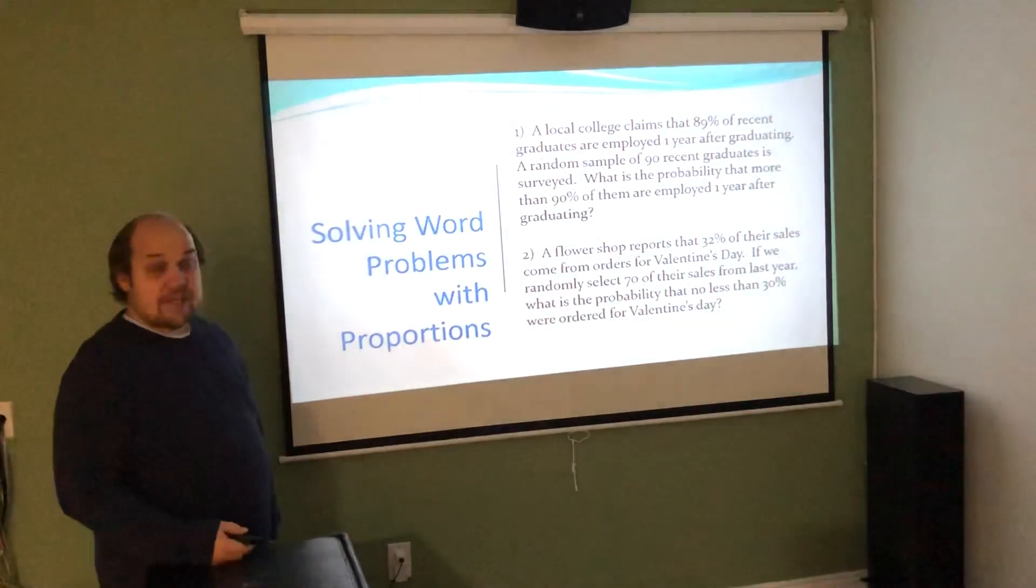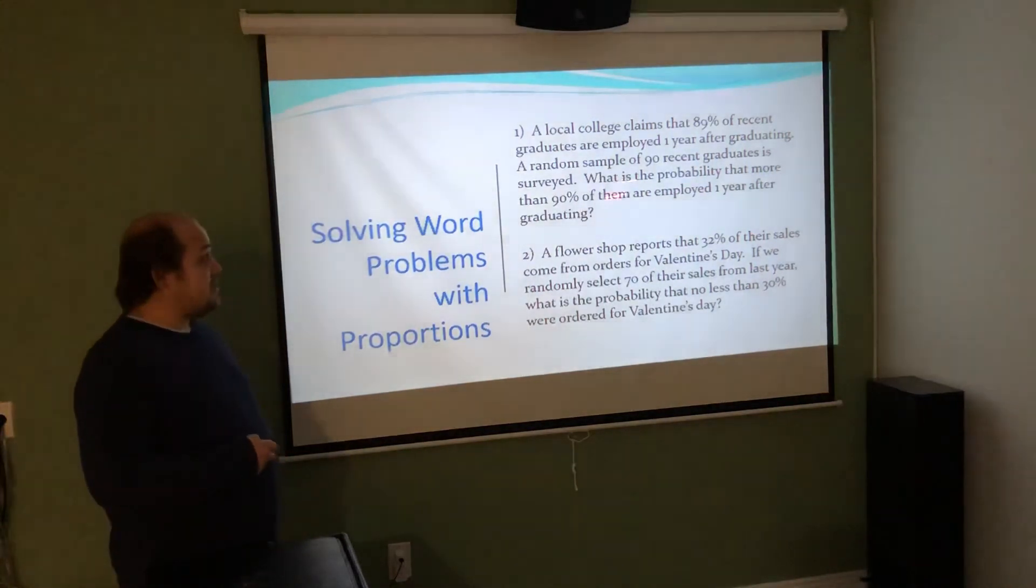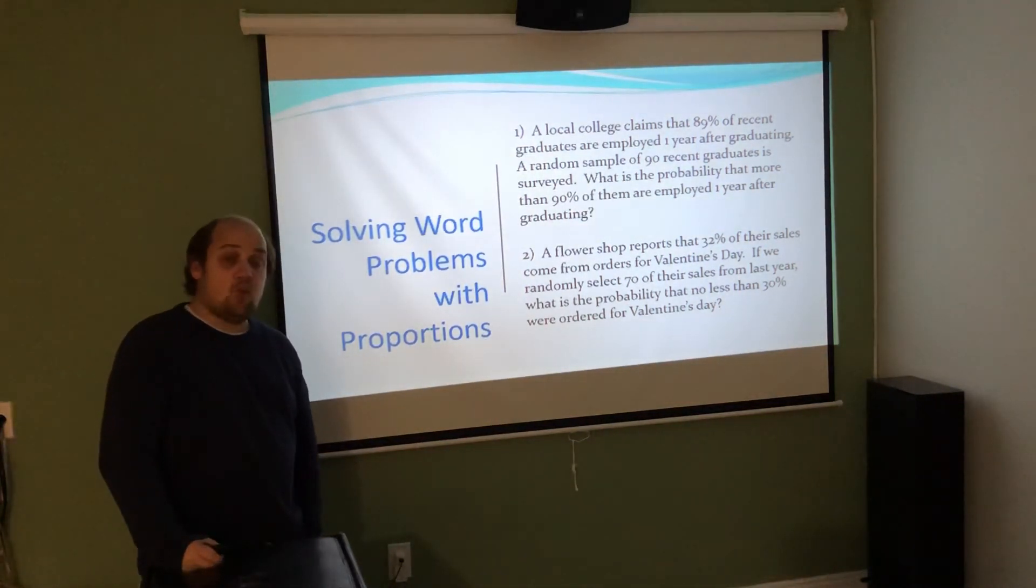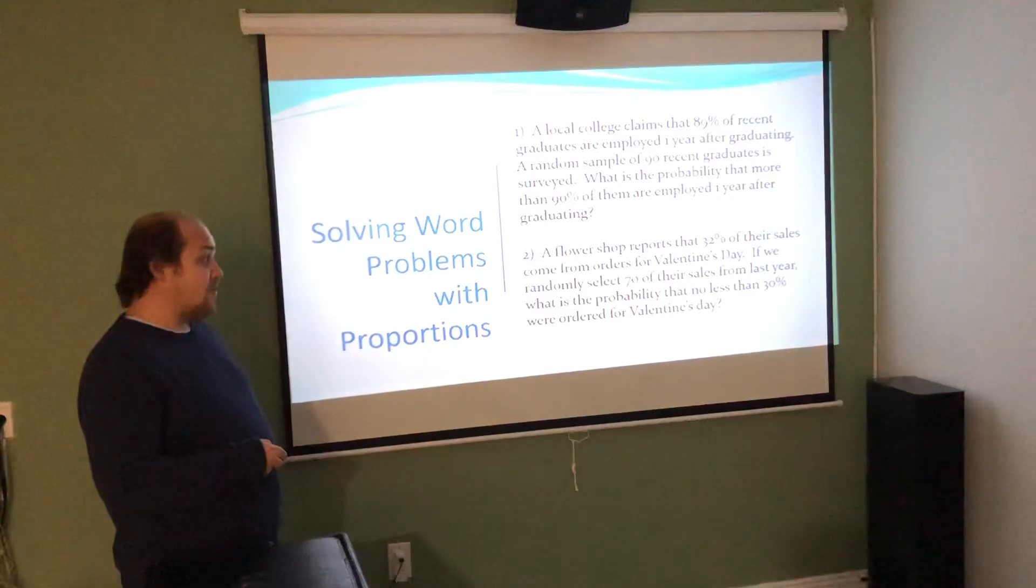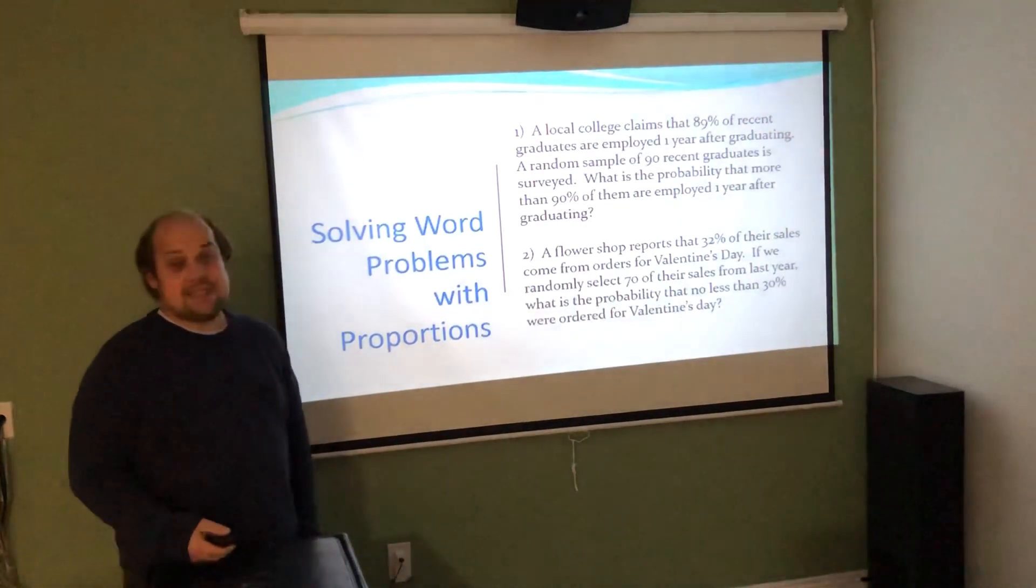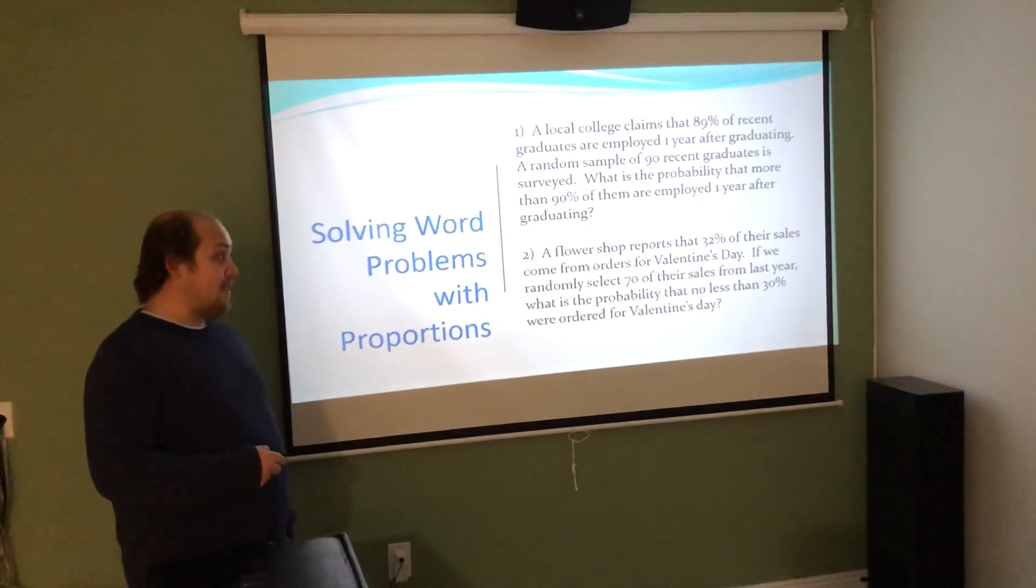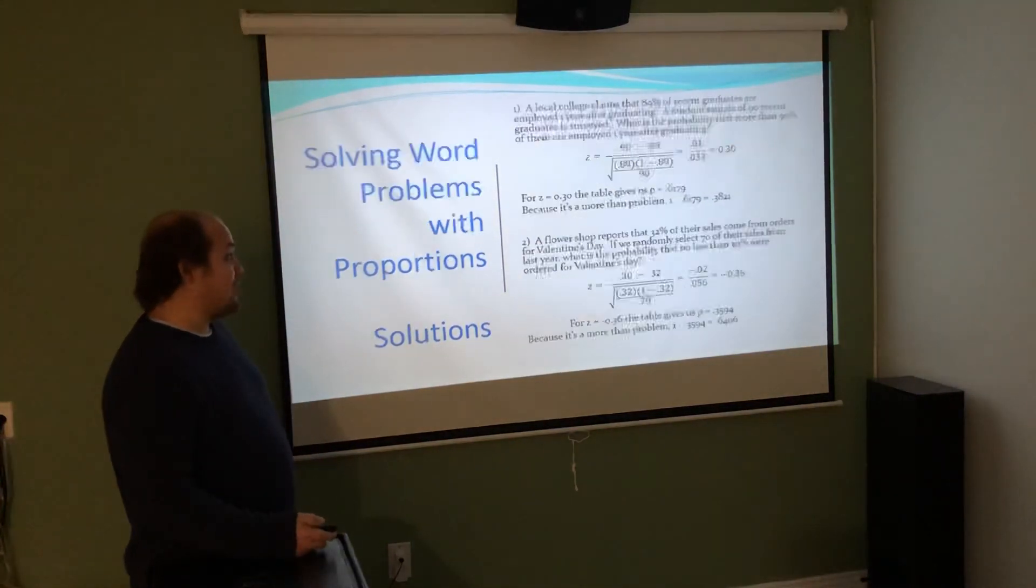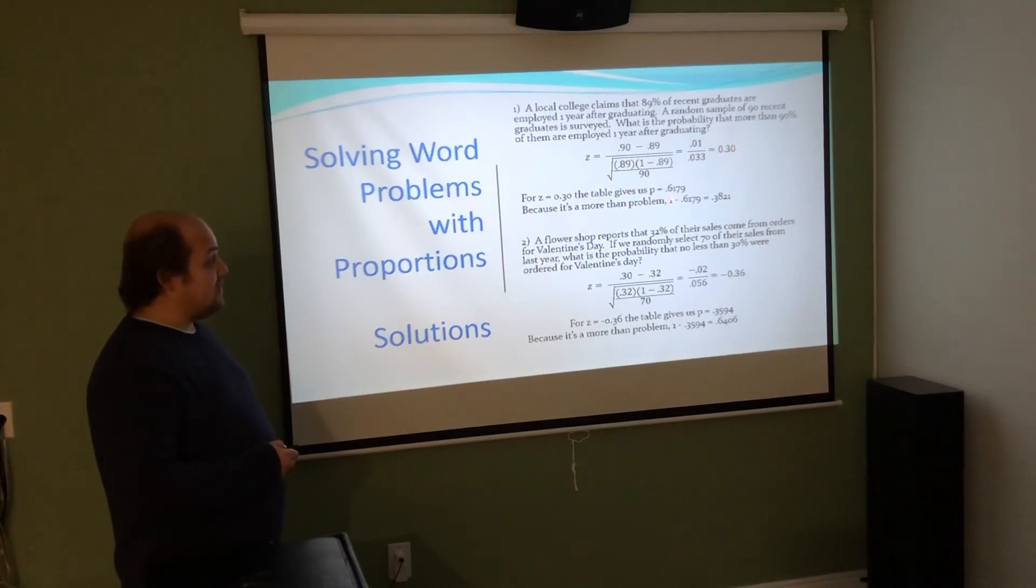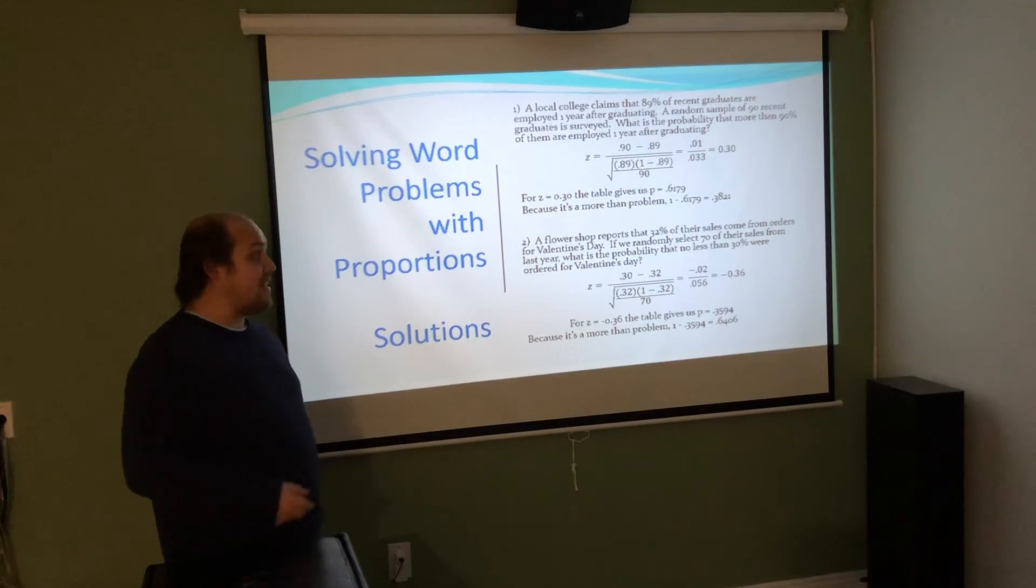Same prompts for each of these, just asking a different question. This time it's saying, what's the probability of more than 90%? For more than 90%, we do 0.90 minus 0.89 over that same square root. When we find an answer, we look up the z-score in the table and do 1 minus the table value. The flower shop reports 32% of their sales - still 32 is our p, but now we're looking for no less than 30%. No less than 30% is the same thing as more than. We're going to do 0.30 minus 0.32 over the root of 0.32(1-0.32) over 70. We get a z-score of 0.30, which points to 0.6179. If I do 1 minus 0.6179, that's how I get to the correct answer, 0.3821. Same idea for number two - we first get our z-score of negative 0.36. The less than value would be 0.3594. Since we want more than, we do 1 minus that to get 0.6406 as our final answer.